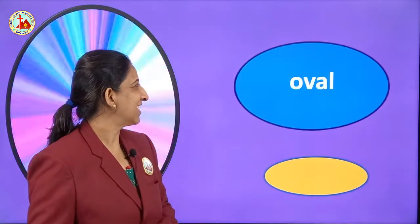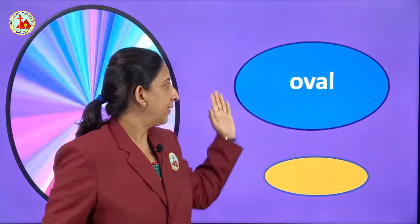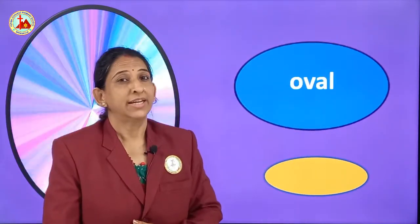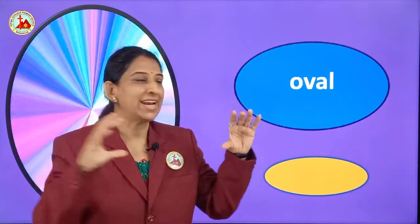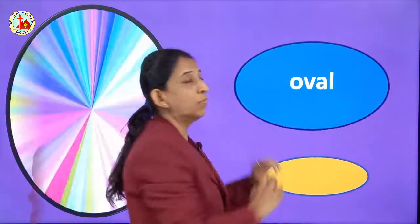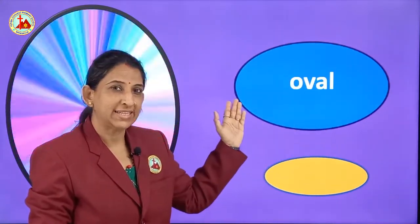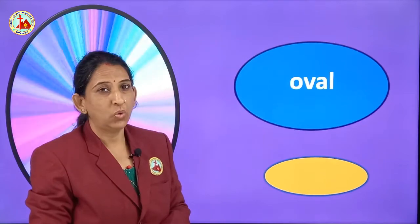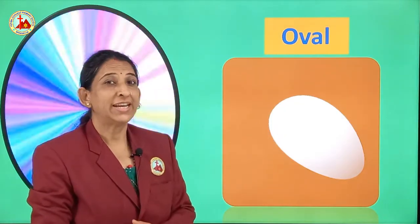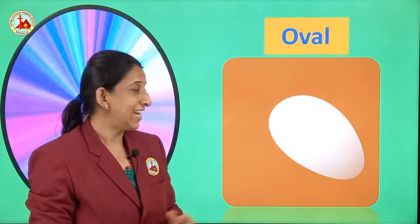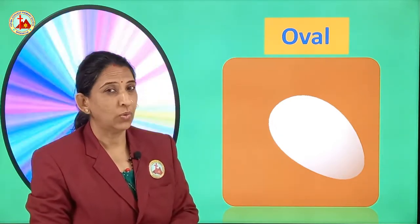This is an oval shape. It looks like a circle but it is more extended at the sides. This is which shape? Oval. Have you ever seen an egg? Yes, this is an oval shape. Egg is of oval shape.